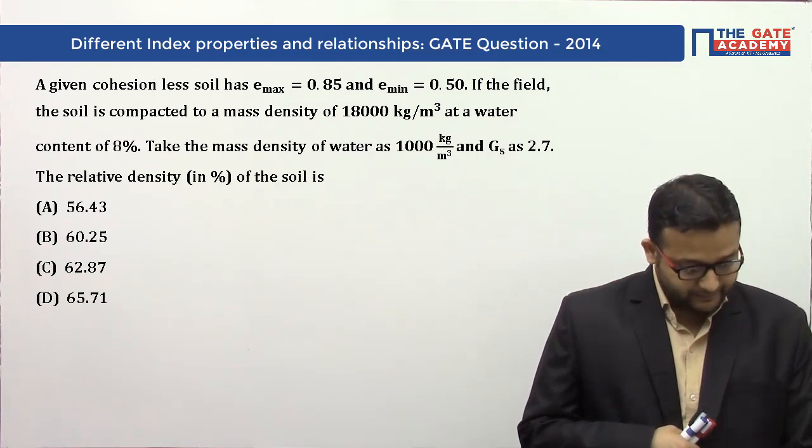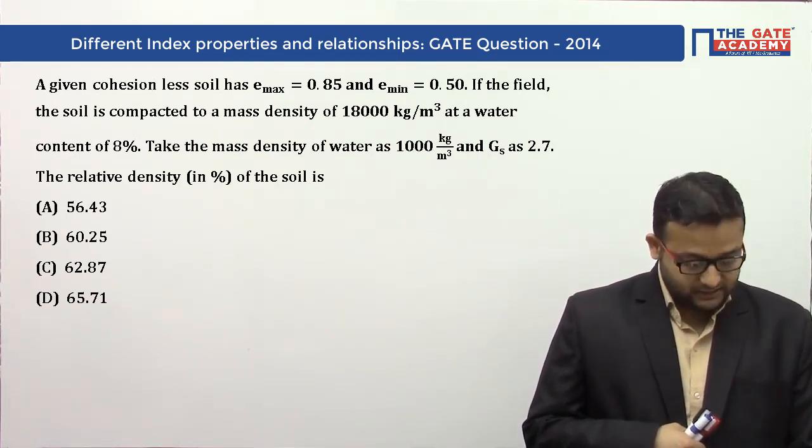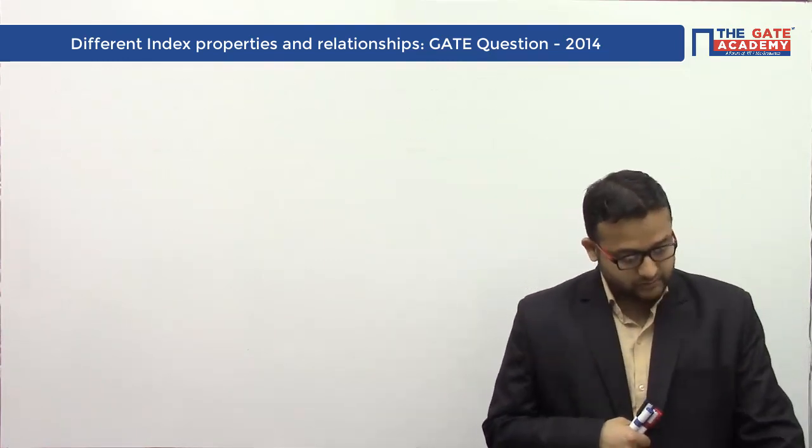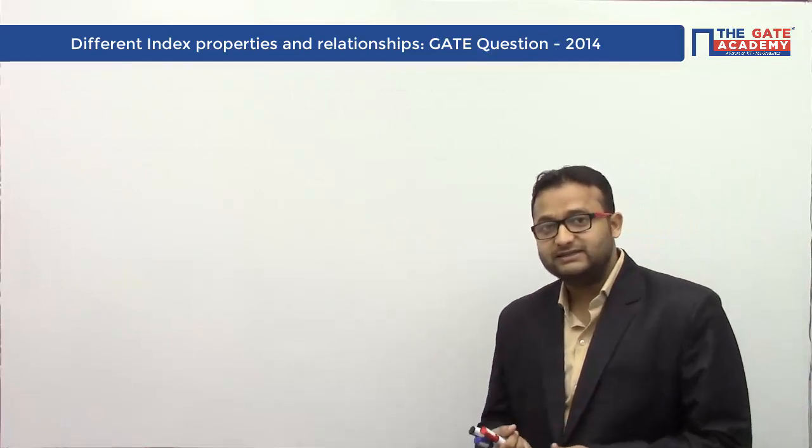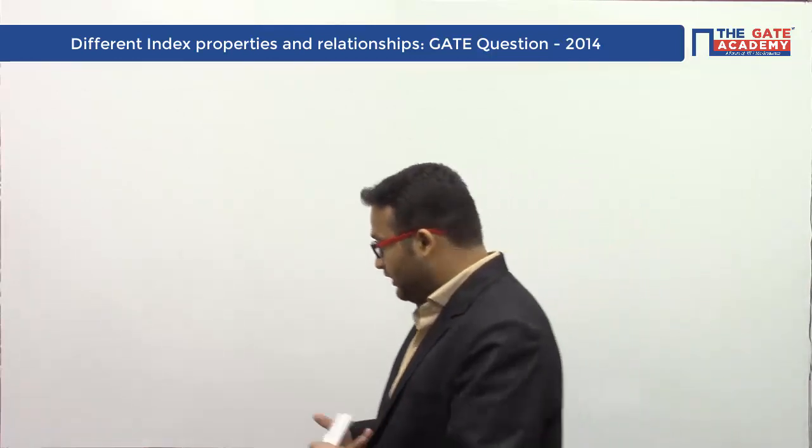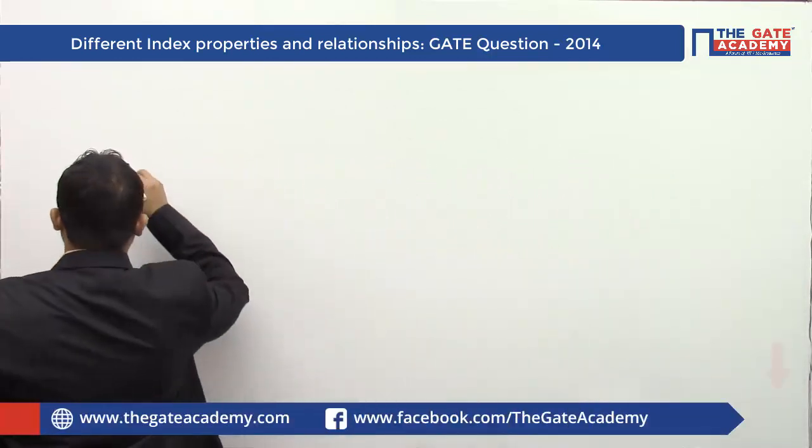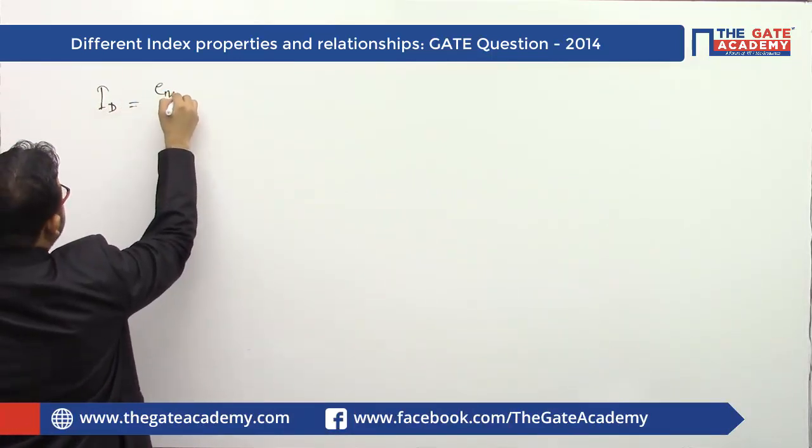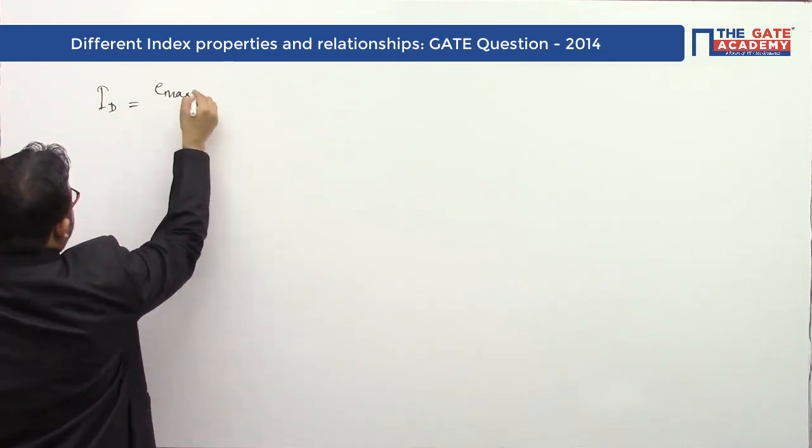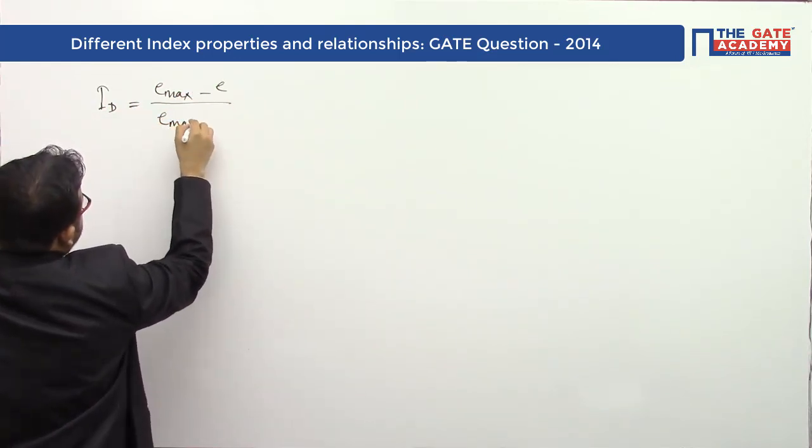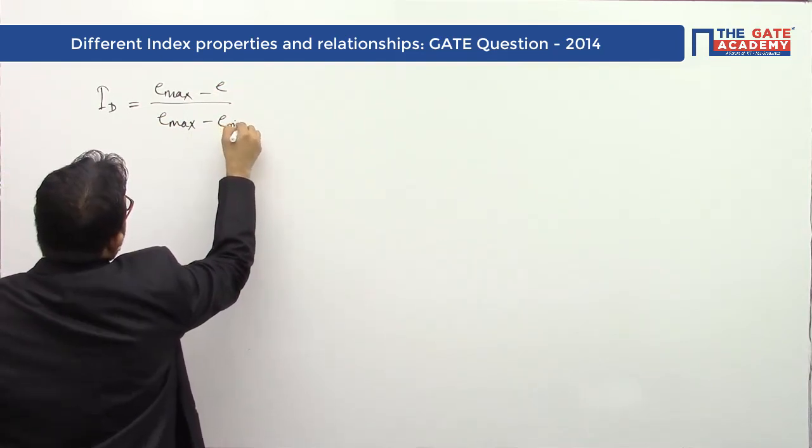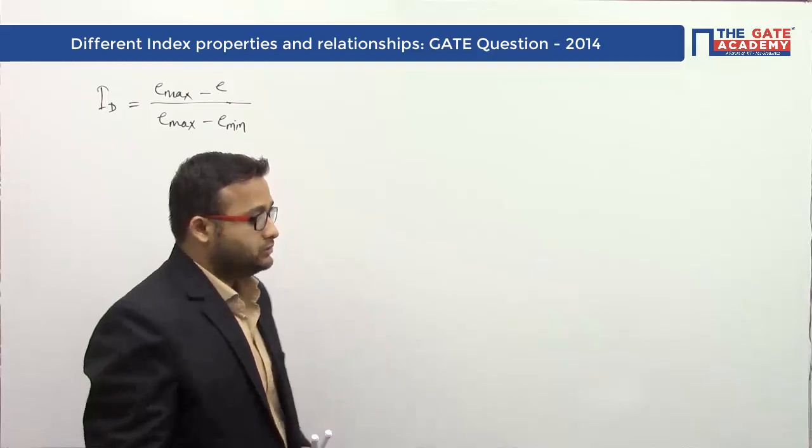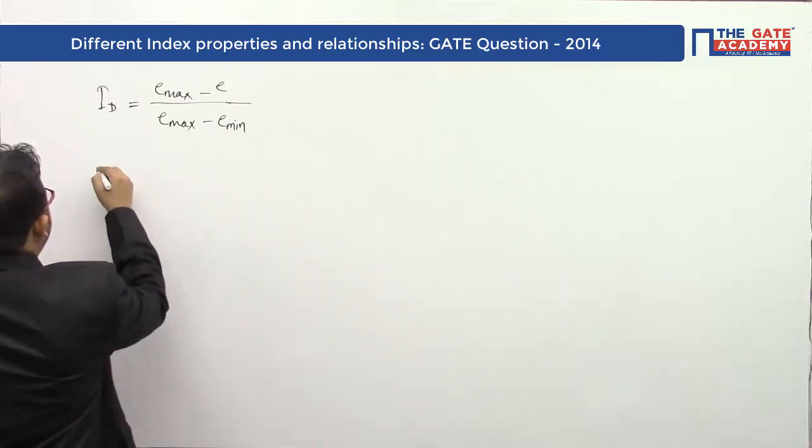The relative density in percentage of the soil is what we need to estimate - the density index. First, let me write the formula of density index: I_D = (e_max - e) / (e_max - e_min). e_max and e_min are given, but the value of natural void ratio e is not given.